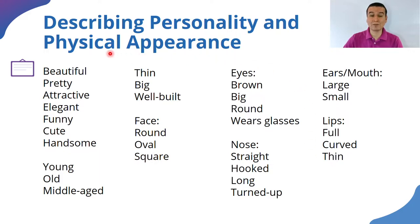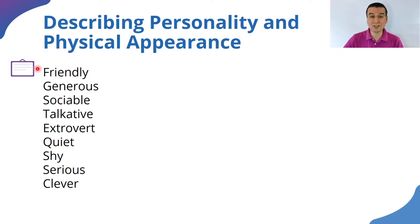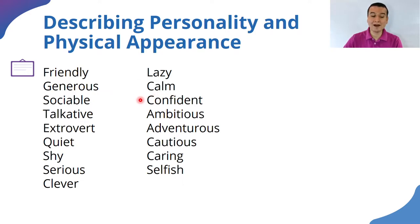To talk about a person's personality, we have a lot of words. Here are some examples — practice the pronunciation and make sure you understand them all. We could say: friendly, generous, sociable, talkative, extroverted, quiet, shy, serious, clever, lazy, calm — note the 'l' is not pronounced — confident, ambitious, adventurous, cautious, and caring.